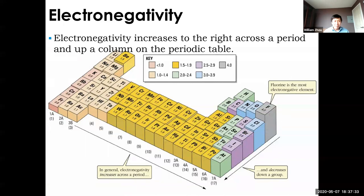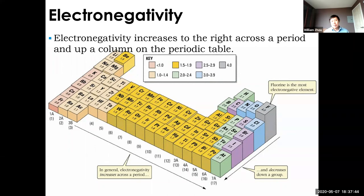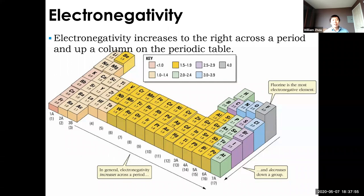There is a trend on the periodic table that describes electronegativity. In the top right corner you have fluorine — the Justin Bieber of the periodic table. Bottom left, you have the ugliest element, francium, with the lowest electronegativity. The trend is: going right and up, electronegativity increases; going left and down, electronegativity decreases.